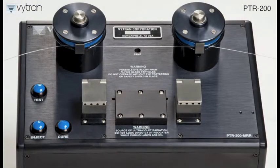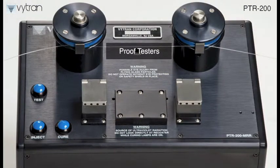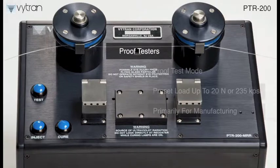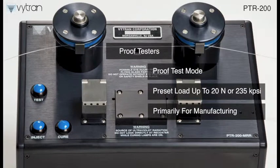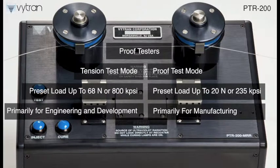Vytran's PTR-200 proof testers apply a set load at a controlled rate to an optical fiber or fusion splice. These loads can be taken up in two ways. In proof test mode, the load is taken up to a predetermined level and released. In tension test mode, the load can be taken up to the breaking strength of the fiber.